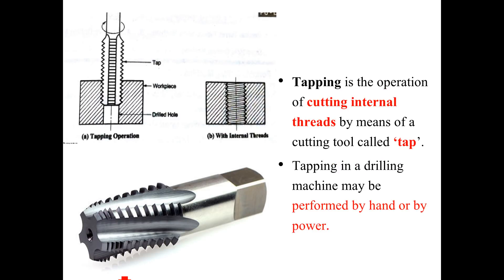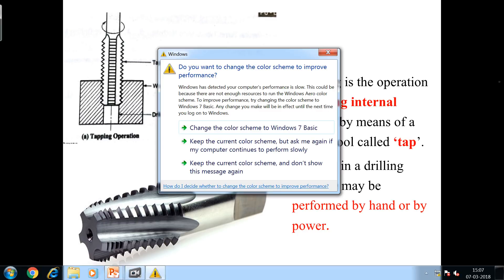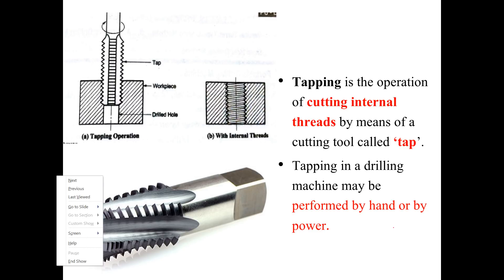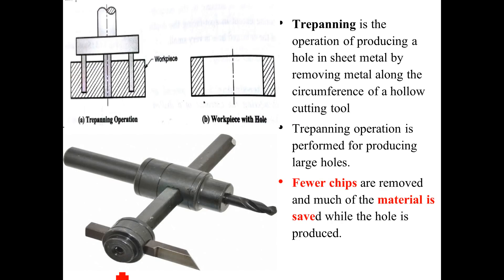The next operation is tapping. Tapping is a basic operation to create or cut internal threads inside a drilled hole. For example, if we have a 15 mm diameter drilled hole and we want internal threads, the operation performed is called tapping. For this we use a tap tool which has threading structures on its surface. It can be performed using power or manually by hand. These are very common operations on the drilling machine.